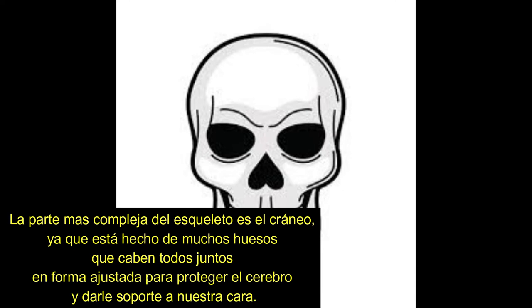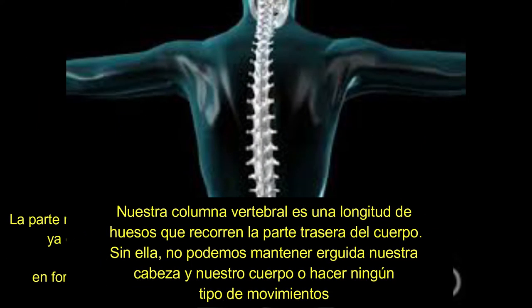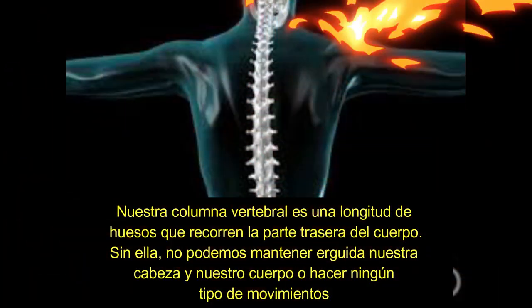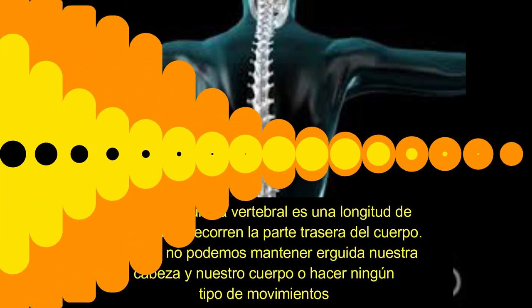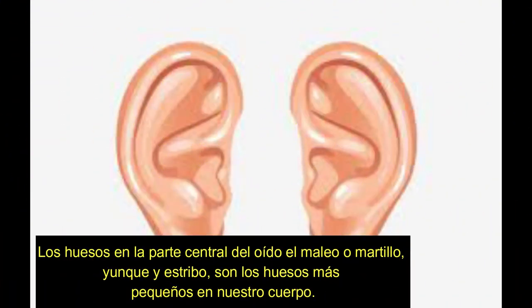The skull is made of many bones that all fit together tightly to protect the brain and support our face. Our spine is a length of bones running along the back of the body; without it we cannot keep our head and body upright or make any kind of movements. The bones in the central part of the ear — the malleus or hammer, the anvil, and the stirrup — are the smallest bones in our body.